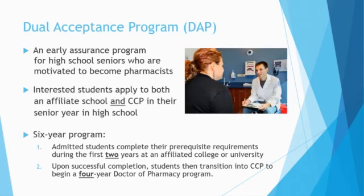So what is the DAP? It's an early assurance program for high school seniors who are motivated to become pharmacists and are looking for a clear path to get there. Interested students apply to both an affiliate school and CCP in their senior year of high school. The DAP is a six-year program. First, students complete their prerequisite requirements during their first two years at an affiliated college or university.